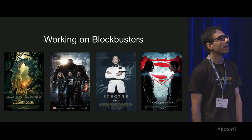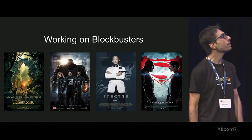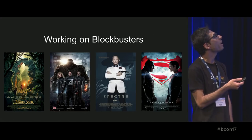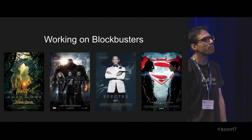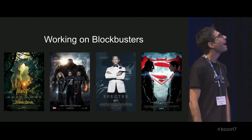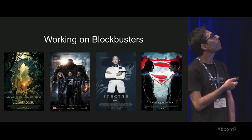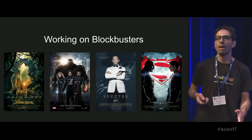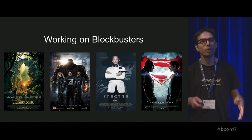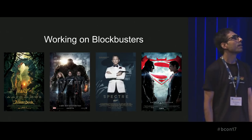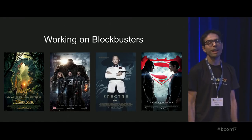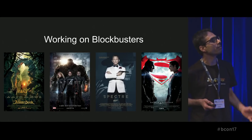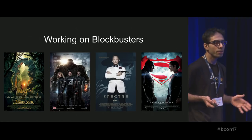Then I thought it would be cool to work on movies, so I flew to London and joined MPC. It was nice — I worked on many movies that year: The Jungle Book, Fantastic Four, Spectre, and Batman vs Superman. It was my first time in a very big pipeline. I moved from a very small studio where everybody did everything as a generalist, and then I went to work as a rigger on these films.